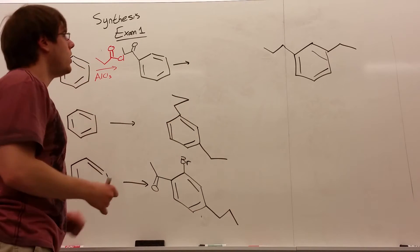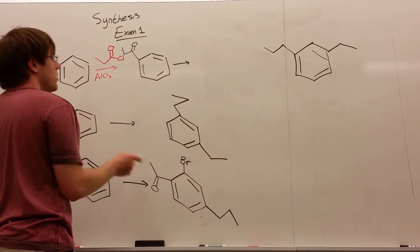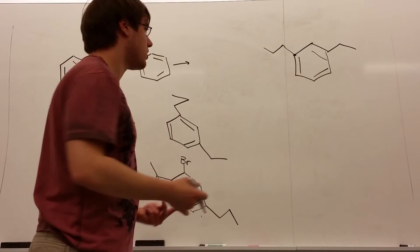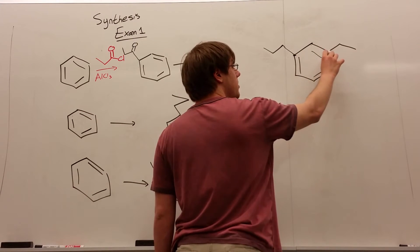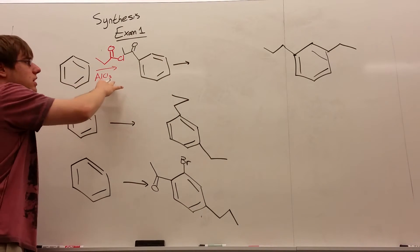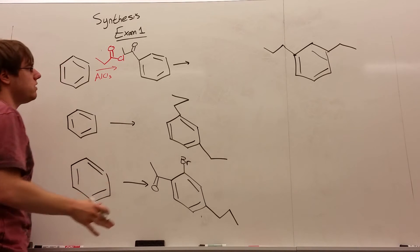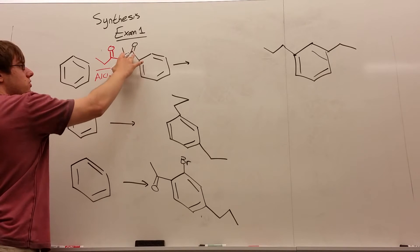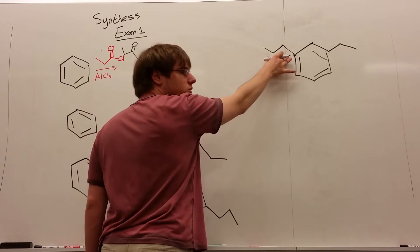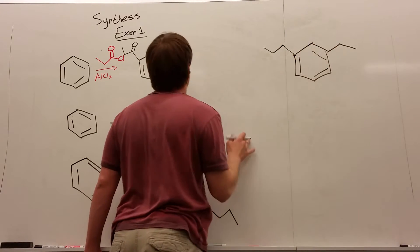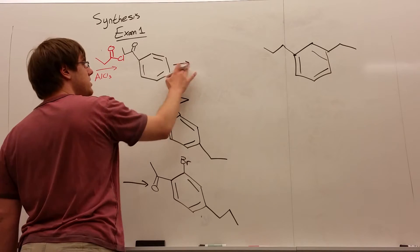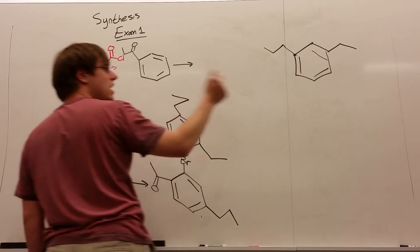Now I have to ask: what is the position of the other group relative to this group? This is the group I just added. Counting around the ring, they are three apart — that means they are meta to each other. So whatever I added first had to direct the other group to the meta position. This reaction can be either a meta or an ortho-para director depending on what you leave it as. If I reduce it with zinc-mercury now, that carbon chain is an ortho-para director. But if I leave it as the carbonyl, that double bond O is a meta-director.